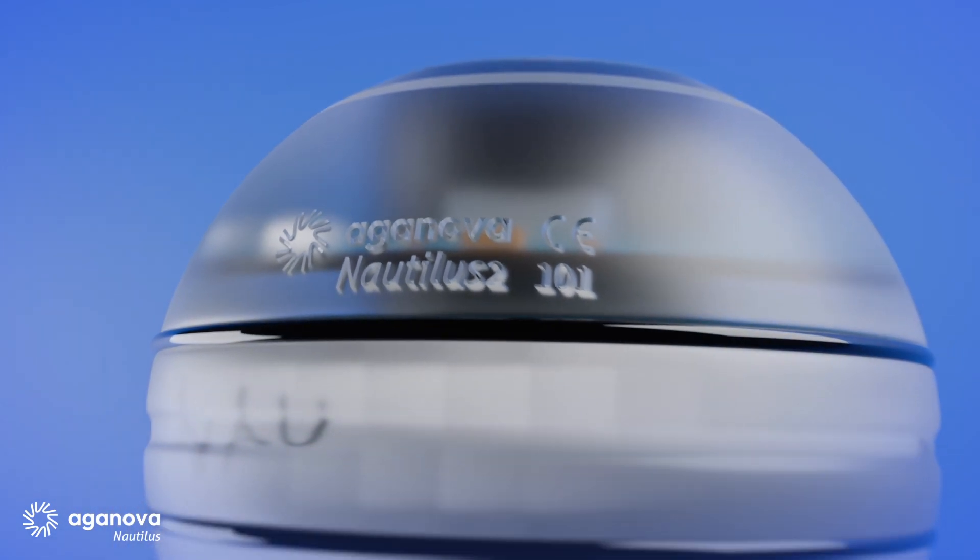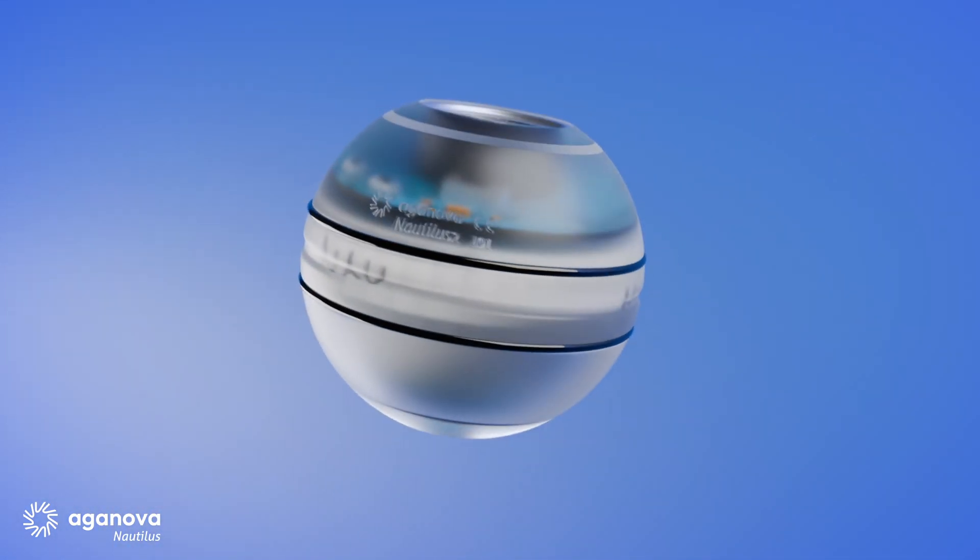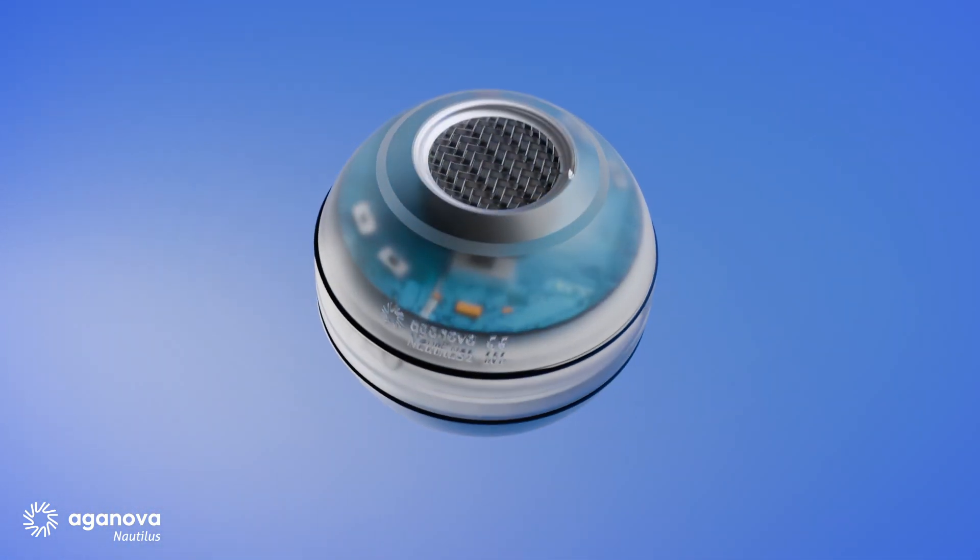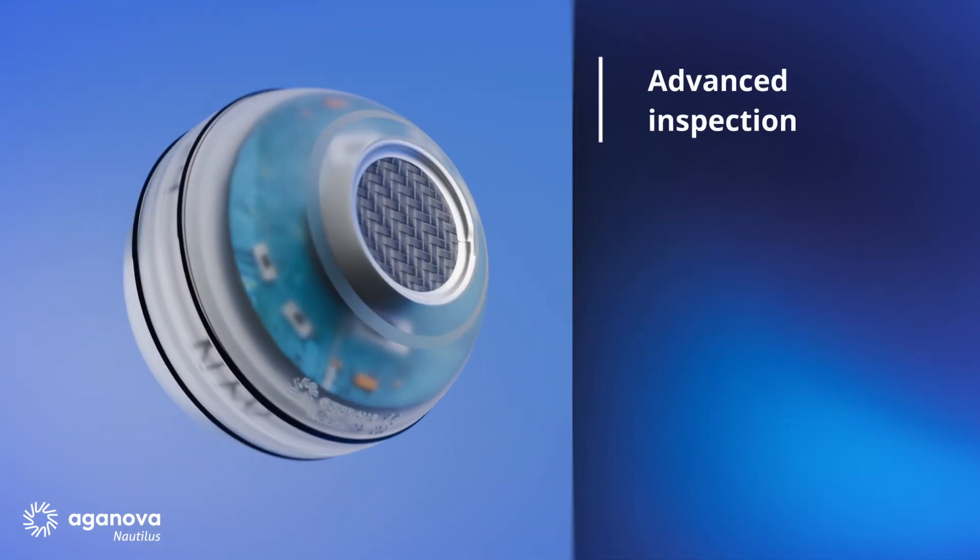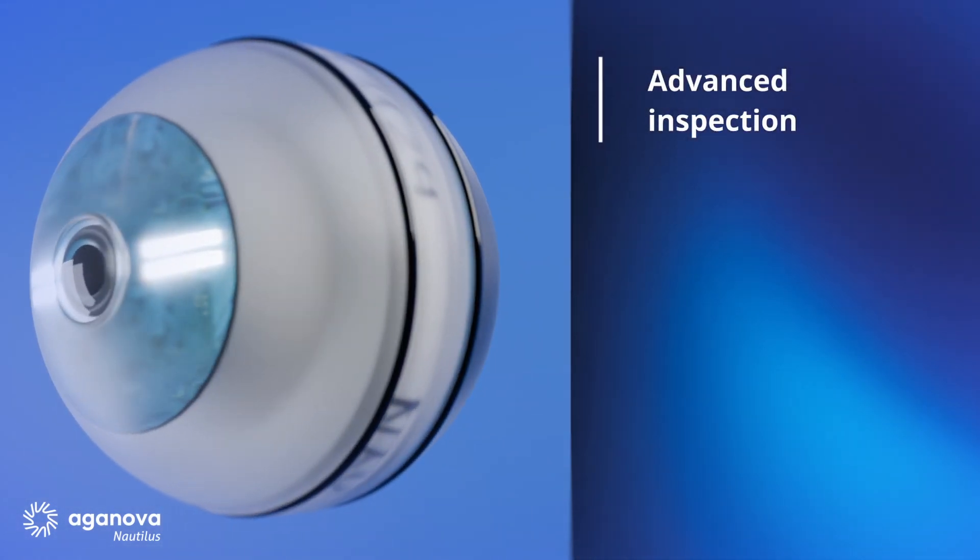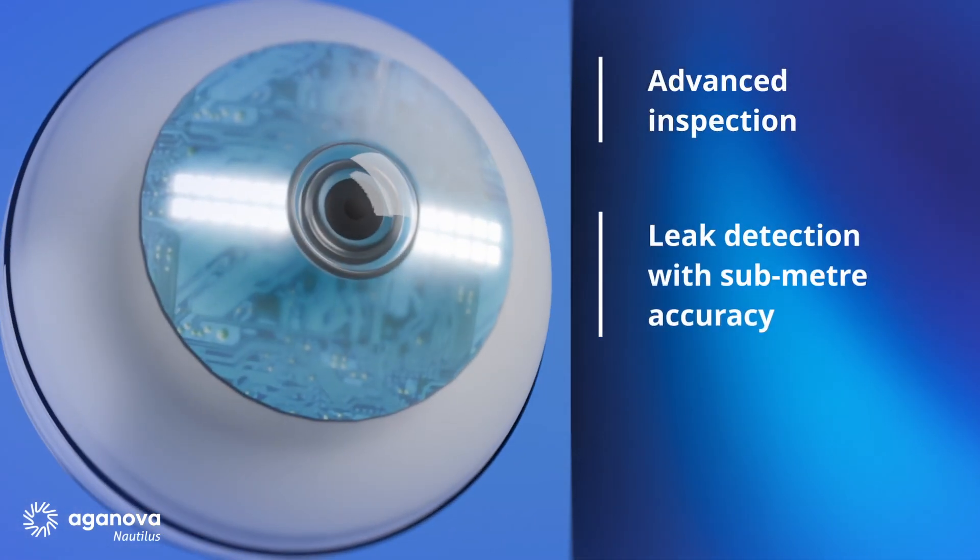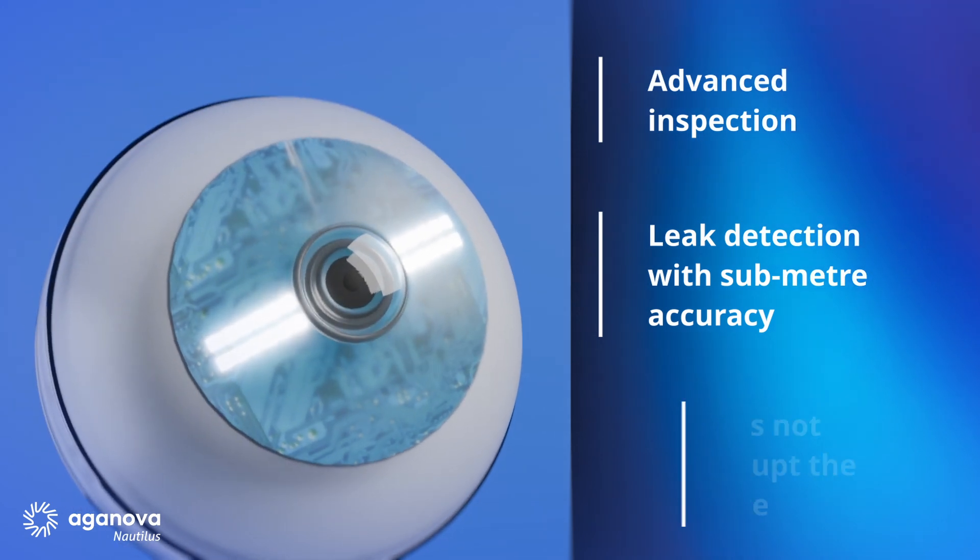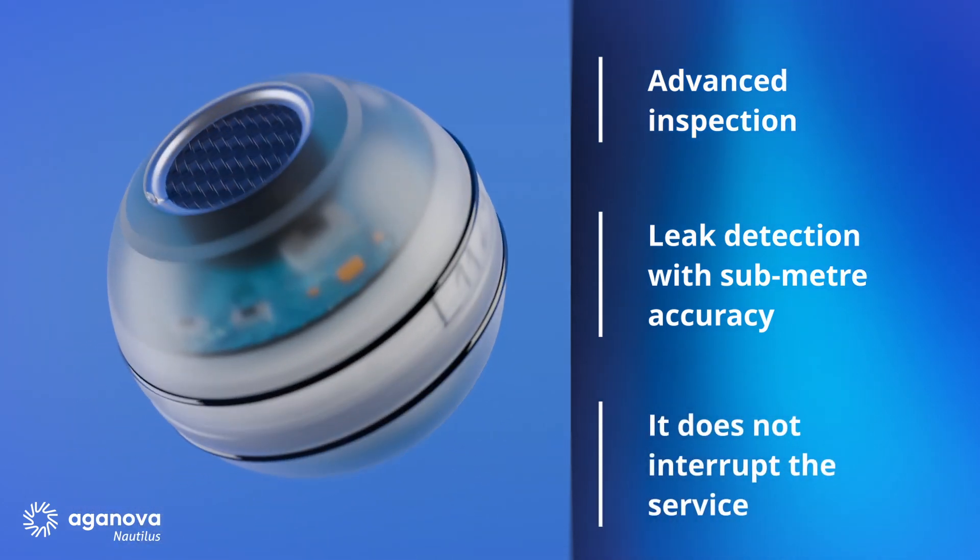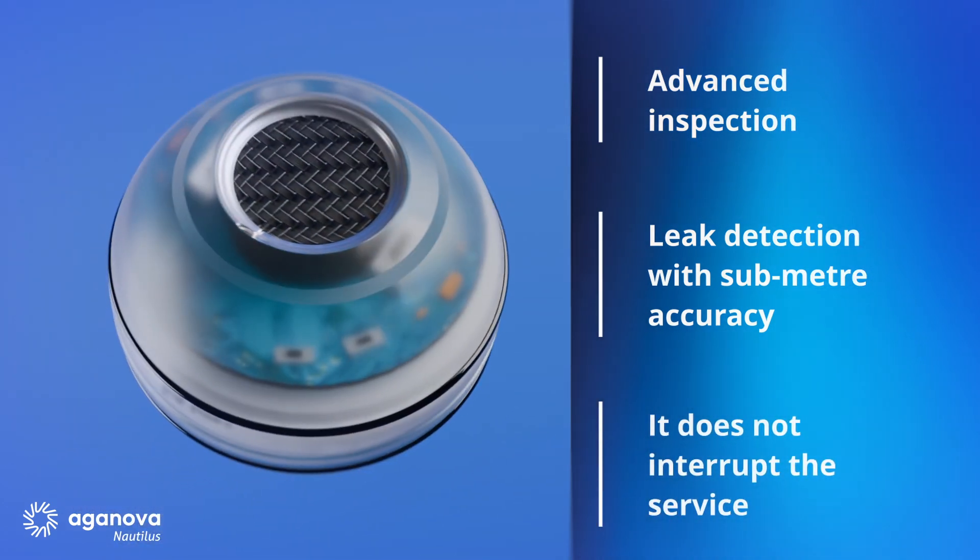At Aganova, we have designed Nautilus, an intelligent sphere that inspects large diameter pipes from the inside. Equipped with acoustic and other advanced sensors and AI-driven analysis, it can detect leaks with sub-meter precision without interrupting the water service.